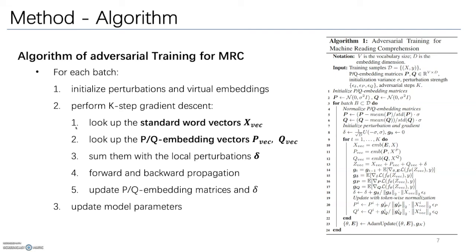We look up the standard word vector from the embedding layer, and look up the PQ embedding vectors from the PQ embedding matrices. We sum them with the local perturbations delta. Then we perform forward and backward propagation to compute the gradients. With the gradients, we update PQ embedding matrices and delta.